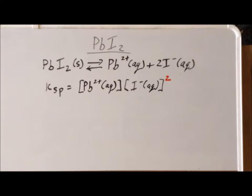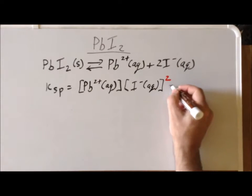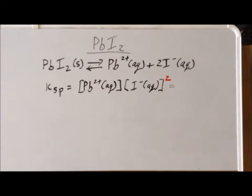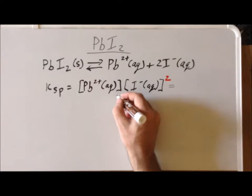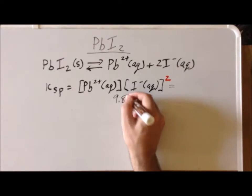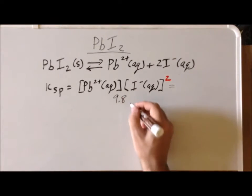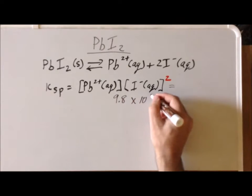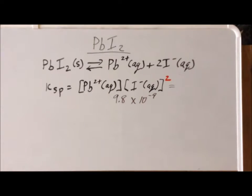The other thing to keep in mind in this particular case is that we would look up the value of the equilibrium constant expression in a table. We notice for this particular compound that this expression has the value of 9.8 times 10 to the minus 9. We see it's much smaller than 1, so only a small amount of the lead iodide is actually going to dissolve.